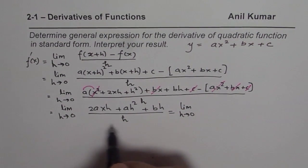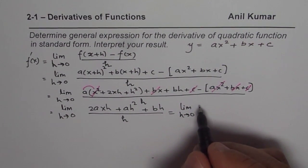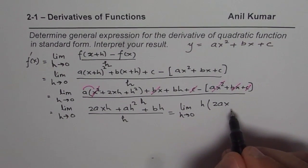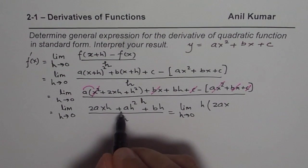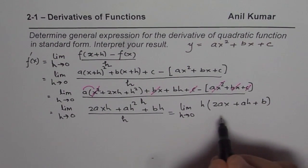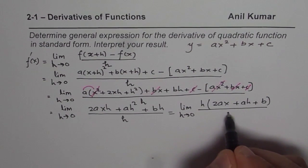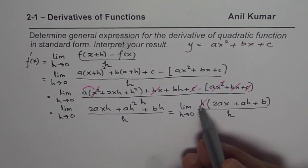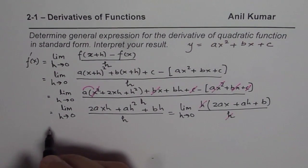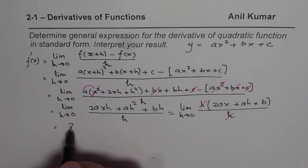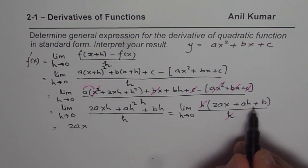Now this I could write as limit h approaches 0. We can take h common. So if I take h common, I am left with 2ax plus h plus b divided by h. Now we can cancel out h and substitute h equals to 0 to find the derivative. So we get 2ax plus b.